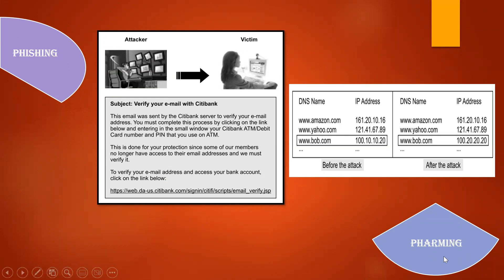Pharming is where the complete IP address is changed. Before the attack, for example, www.bob.com has the IP address 100.10.10.20. After the attack, the IP address changes. The attacker creates a fake IP address that looks similar to the original one. Since we generally don't remember the IP addresses of websites — we remember the website name — the attacker intelligently changes the IP address to look the same as the original, so that the attack can be done easily. This is known as pharming.